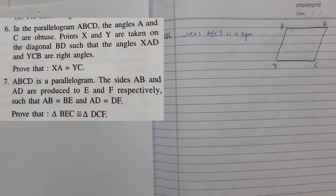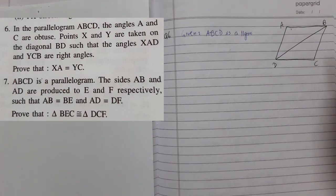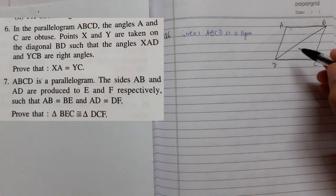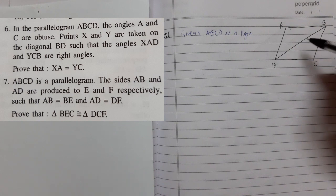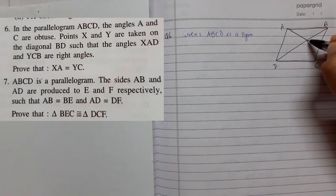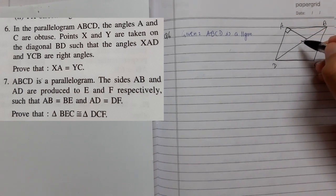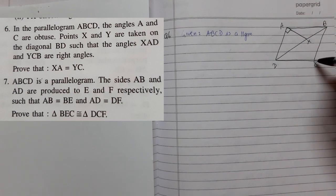Points X and Y are taken on the diagonal BD. Let's draw the diagonal BD. Before drawing points X and Y, let's read ahead. We are told that angle XAD and angle YCB are right angles — since the angle is obtuse, 90 degrees would be somewhere here. So angle DAX is a right angle, and angle YCB is also 90 degrees.